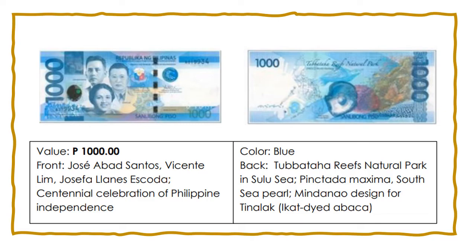In front of the 1,000-peso bill are Jose Abad Santos, Vicente Lim, and Josefa Llanes Escoda. It also shows the Centennial Celebration of the Philippine Independence. Its color is blue. At the back is the Tubbataha Reef Natural Park in the Sulu Sea. It also shows the South Sea Pearl and the Mindanao design for Tinalak.